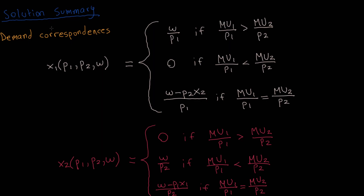To summarize, the three cases can be expressed as demand correspondences — multi-valued demand functions of the two price levels and income. In case one, where the absolute MRS exceeds the MRT, MU1 per dollar is greater, so the consumer only consumes good one: x1 equals W over P1, x2 equals zero. In case two, where indifference curves are flatter, MU2 per dollar is greater, so the consumer only consumes good two: x2 equals W over P2, x1 equals zero. In case three, where slopes are identical, the consumer is indifferent and any bundle on the budget line maximizes utility.